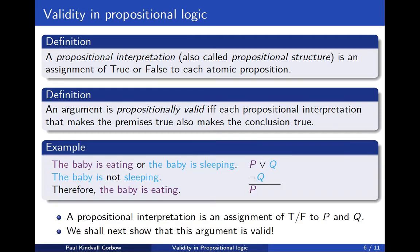So here we have an example. The first premise is that the baby is eating or the baby is sleeping. The second premise is that the baby is not sleeping. And we can then conclude that the baby is eating. In this case we have two atomic propositions: the baby is eating and the baby is sleeping. A propositional interpretation is then simply an assignment of true and false to each of these two atomic propositions P and Q.